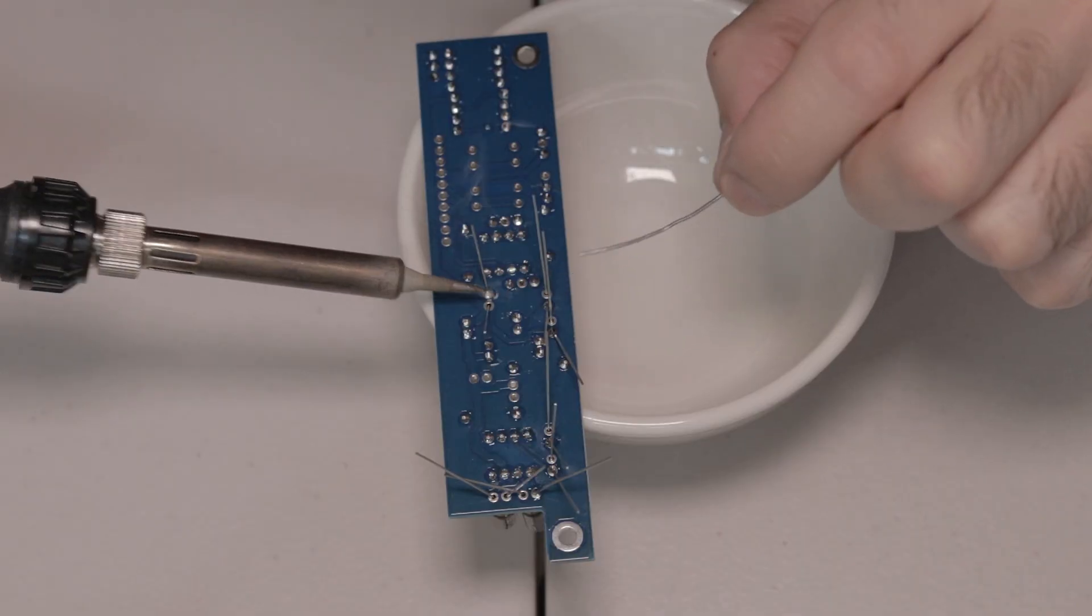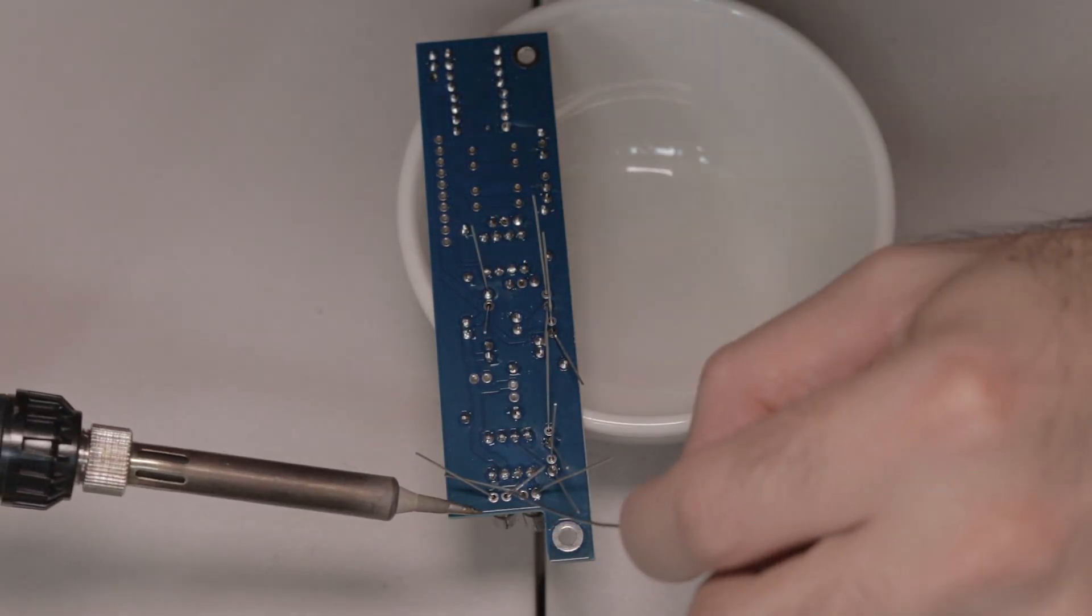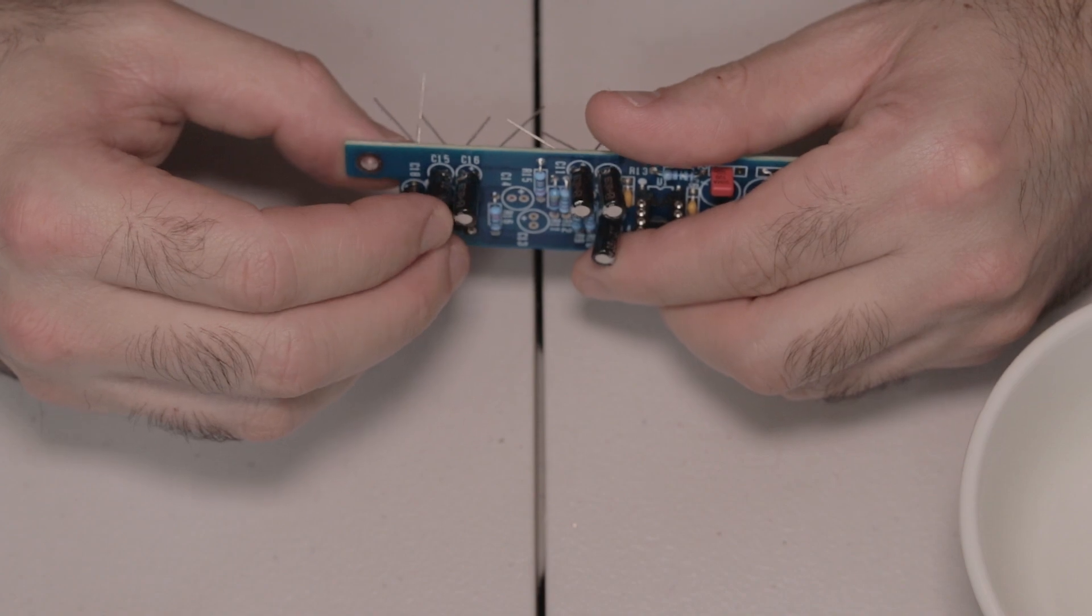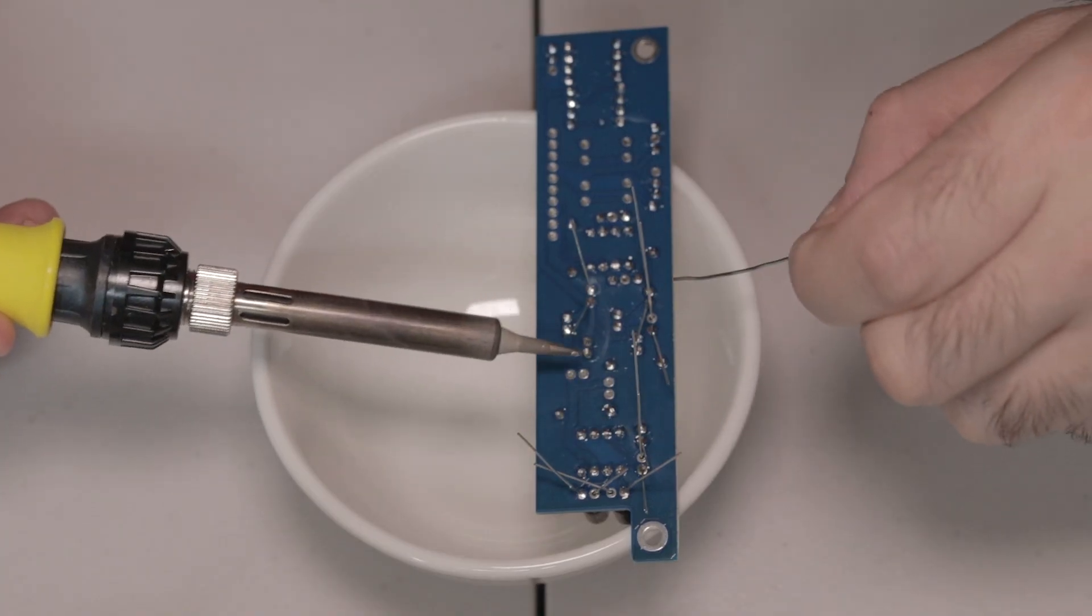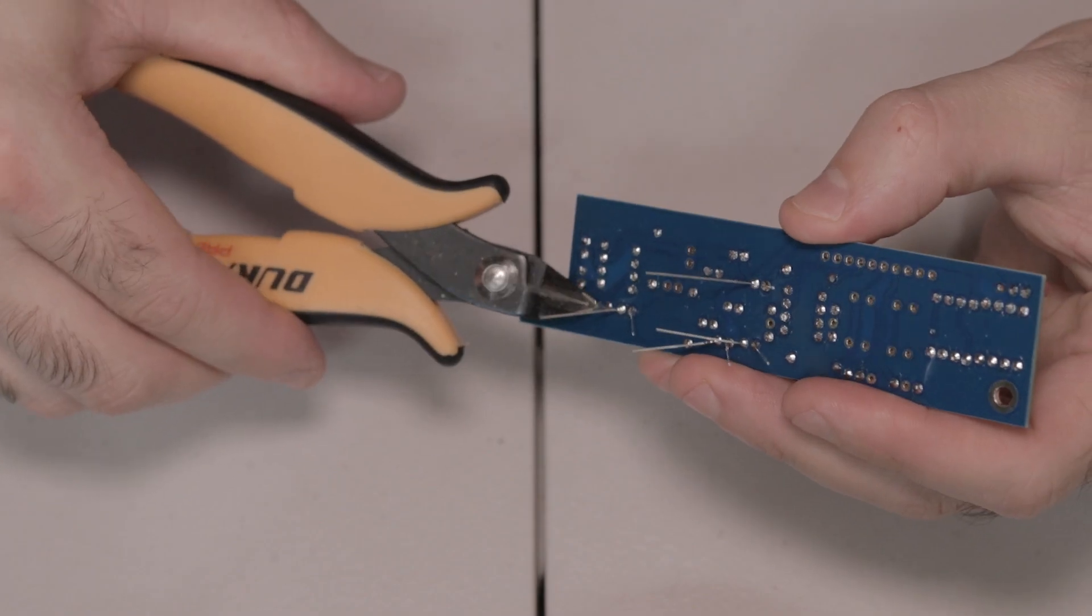And then like always, you can solder one of the legs, check the orientation of them, bend them into place so they're nice and straight if you need to, and then solder the other leg and then give those a snip.